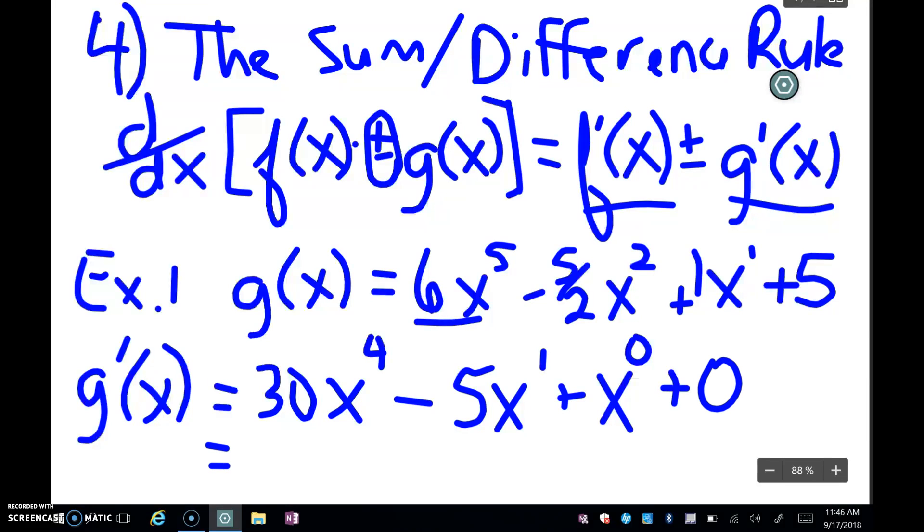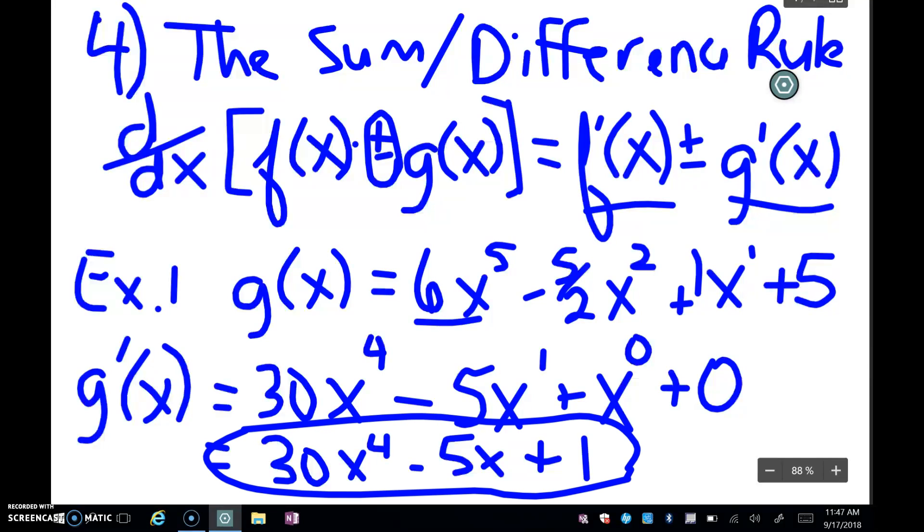So when I simplify everything, my final answer will be 30x^4 - 5x, because we don't need to write to the first power. Remember, plus 1, because anything to the 0 power is 1. And then we don't need to write the 0. So this is my sum and difference rule example, my first example.